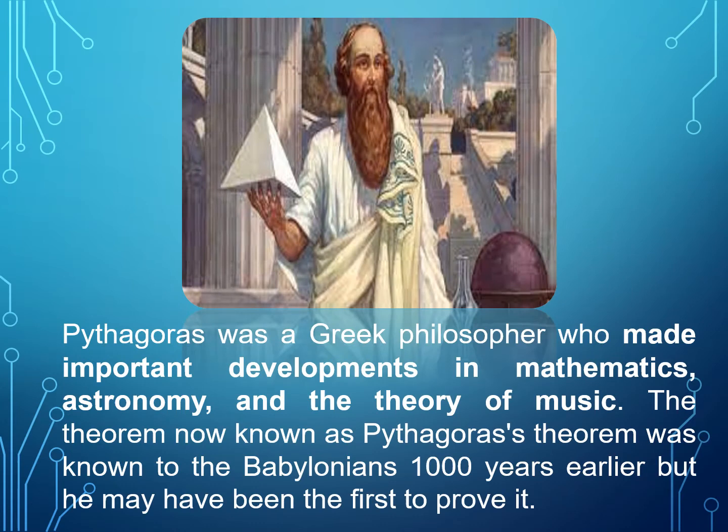The mathematician behind the Pythagorean Theorem is Pythagoras. He was a Greek philosopher who made important developments in mathematics, astronomy, and the theory of music. The theorem known as the Pythagorean Theorem was known to the Babylonians 1,000 years earlier, but he may have been the first to prove it.